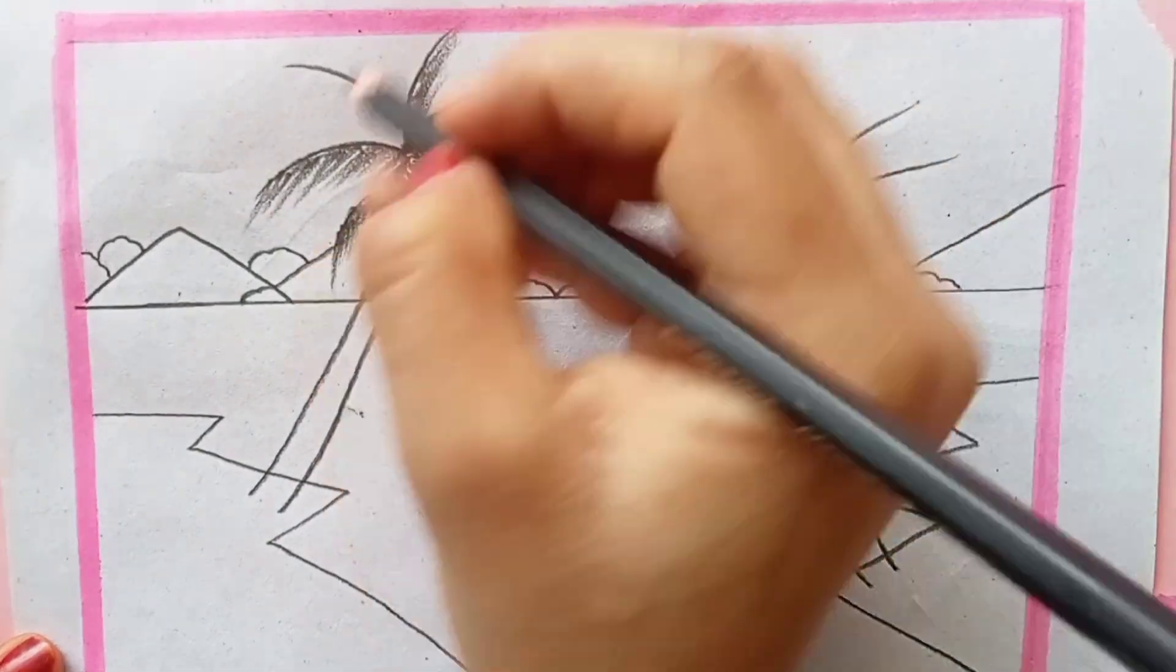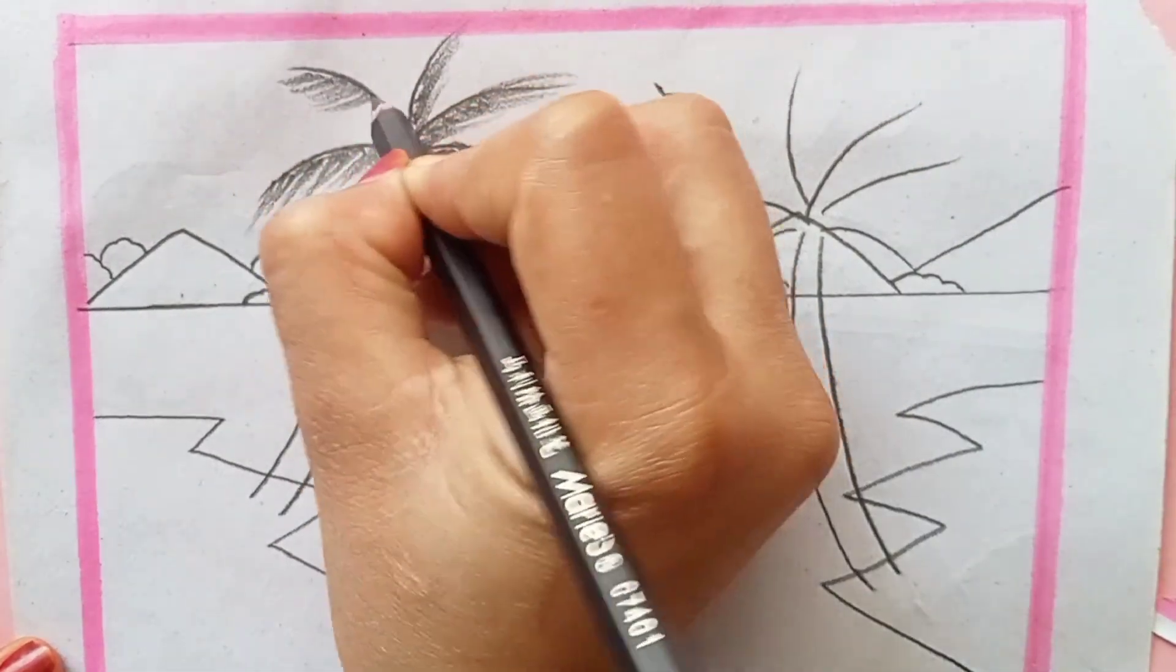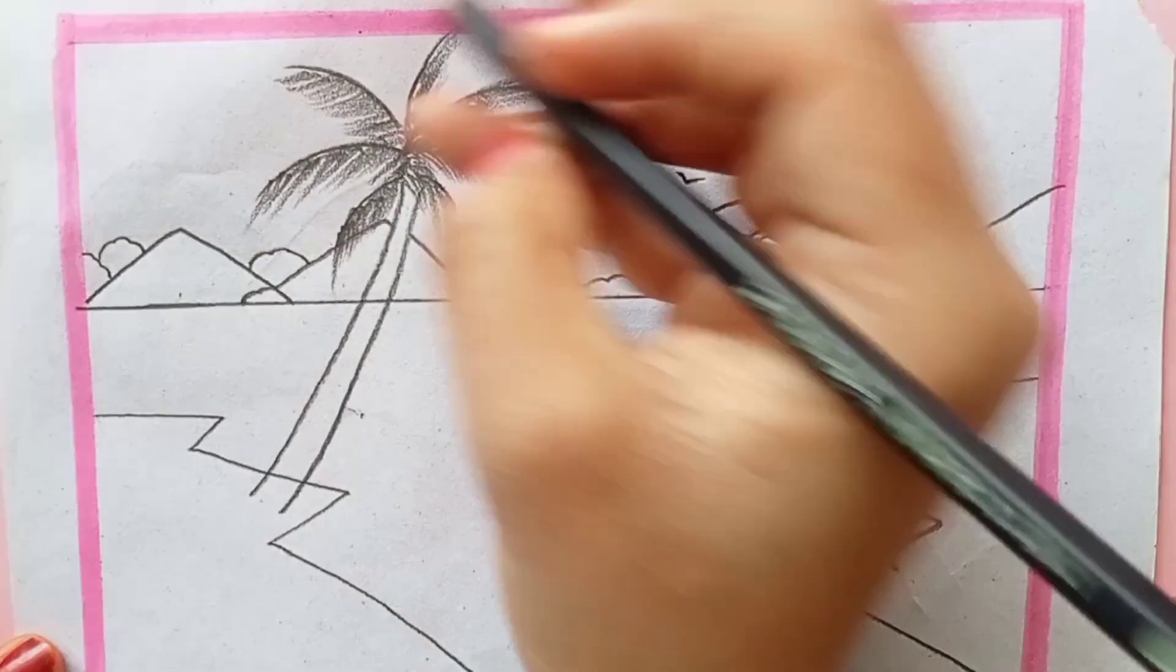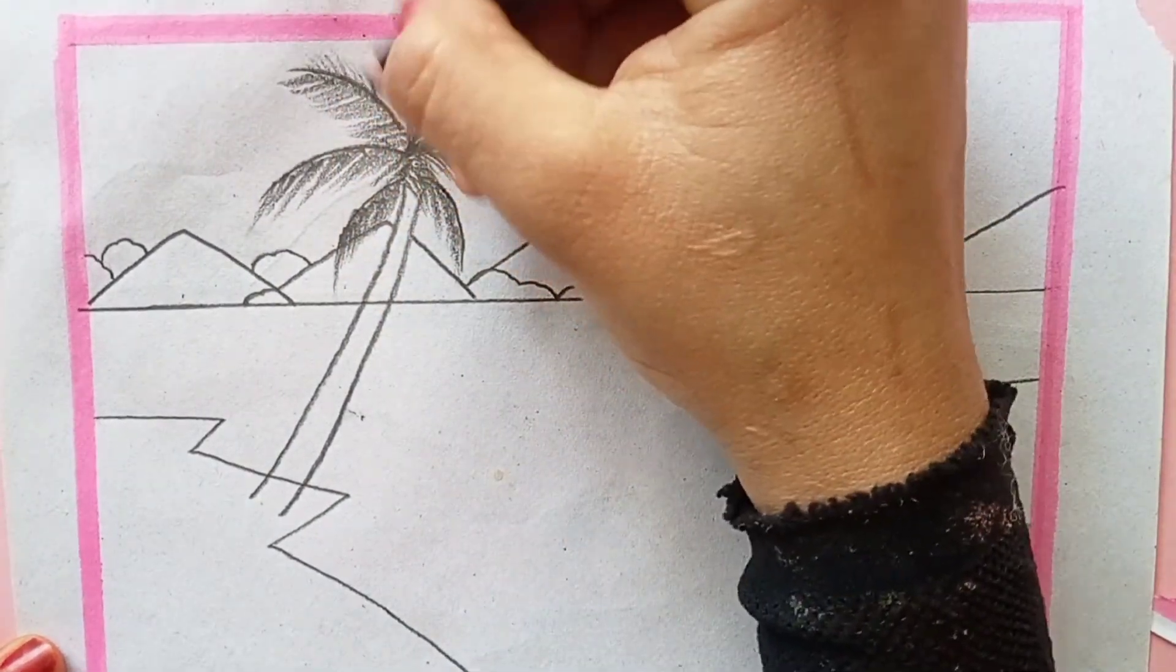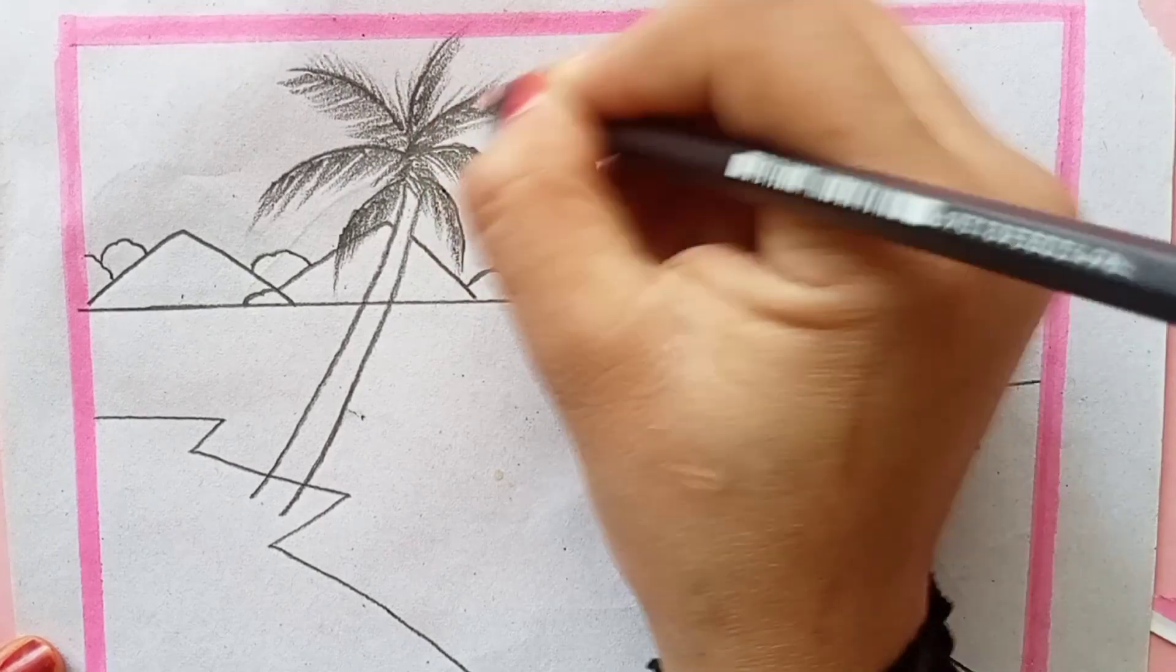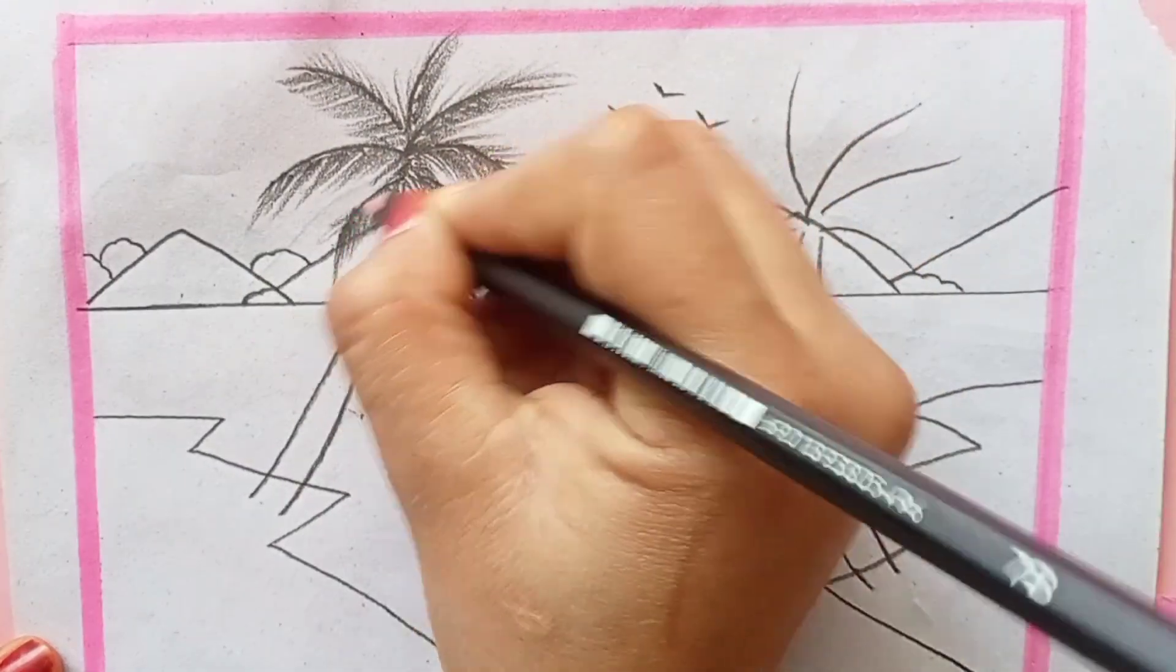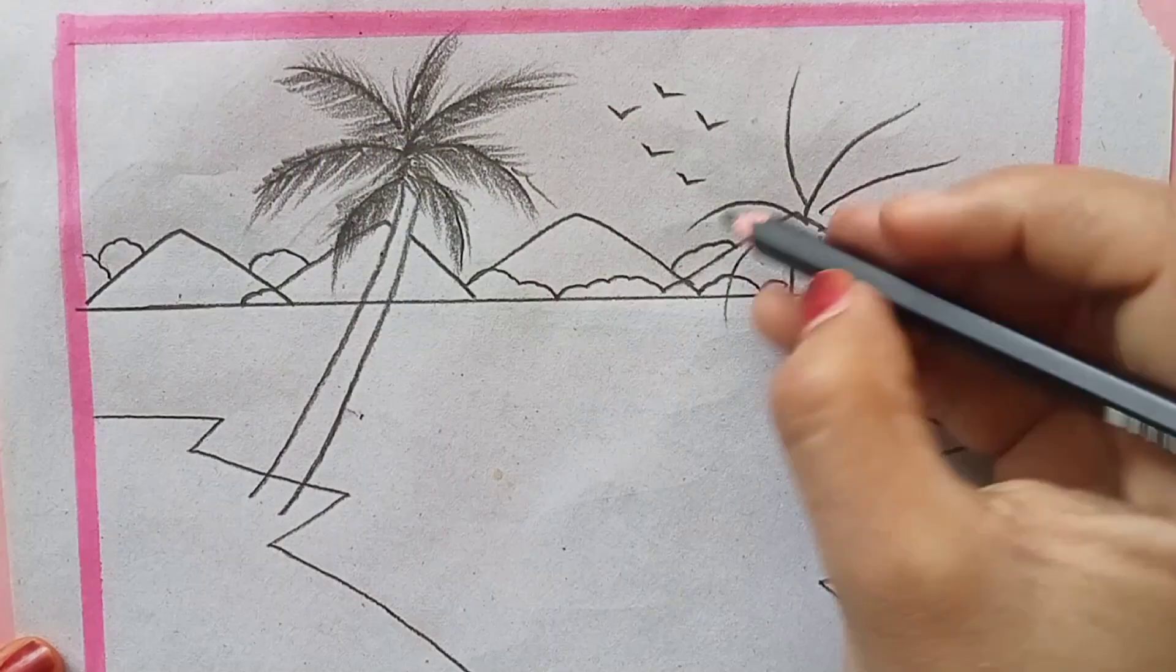Now with an eraser I am erasing the lines that had been coming between the tree barks. And now shading the tree barks by holding the pencil horizontally, just like this.